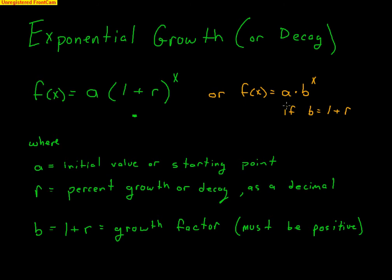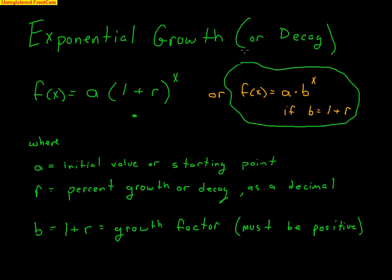Some people prefer writing the formula as A times B raised to X, where B equals (1 plus R). The number B — (1 plus R) — is known as your growth factor, and it must be positive. If B is larger than 1, you're growing; if it's smaller than 1, you're decaying. For example, a growth factor of 0.63 means you're decaying by 37%, since 1 minus 0.37 equals 0.63. Make sure you understand both formulas.